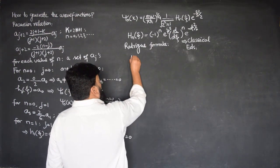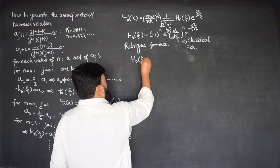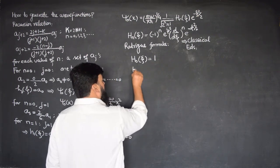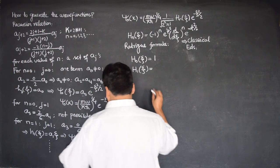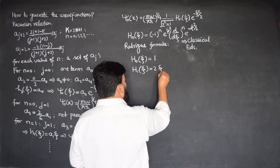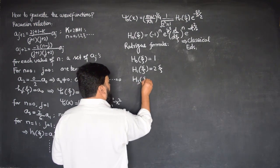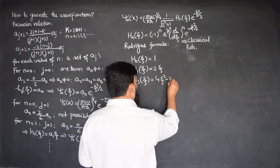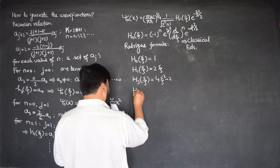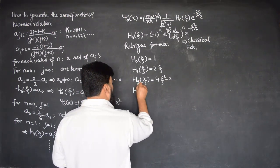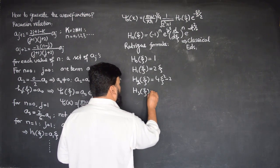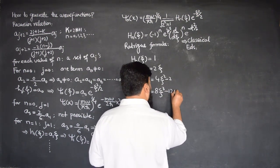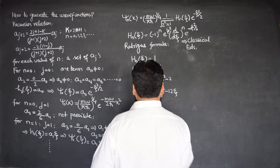But from this formula, we can easily find the Hermite polynomials. H_0 of ξ is equal to 1. H_1 of ξ is 2ξ. H_2 of ξ is equal to 4ξ² minus 2. H_3 of ξ is equal to 8ξ³ minus 12ξ. And so on, we can go on calculating them.